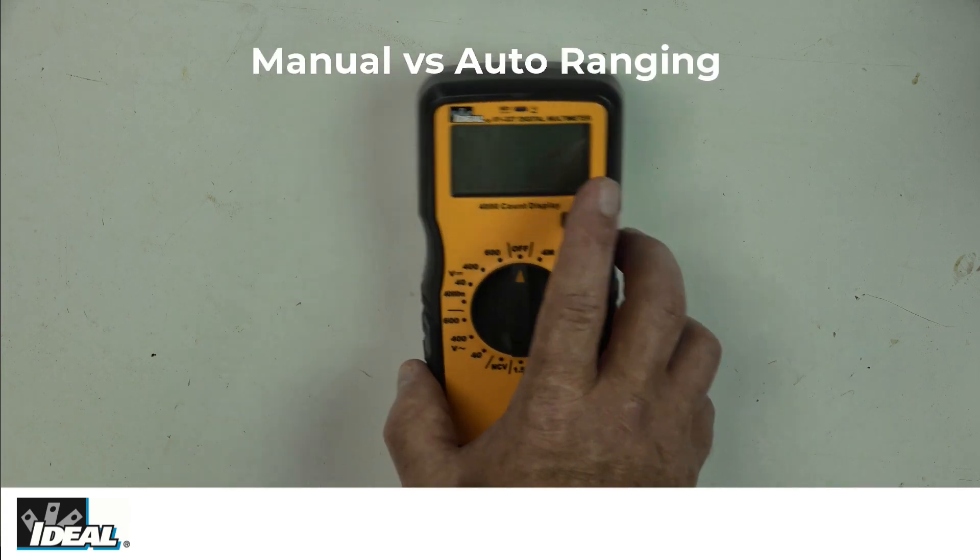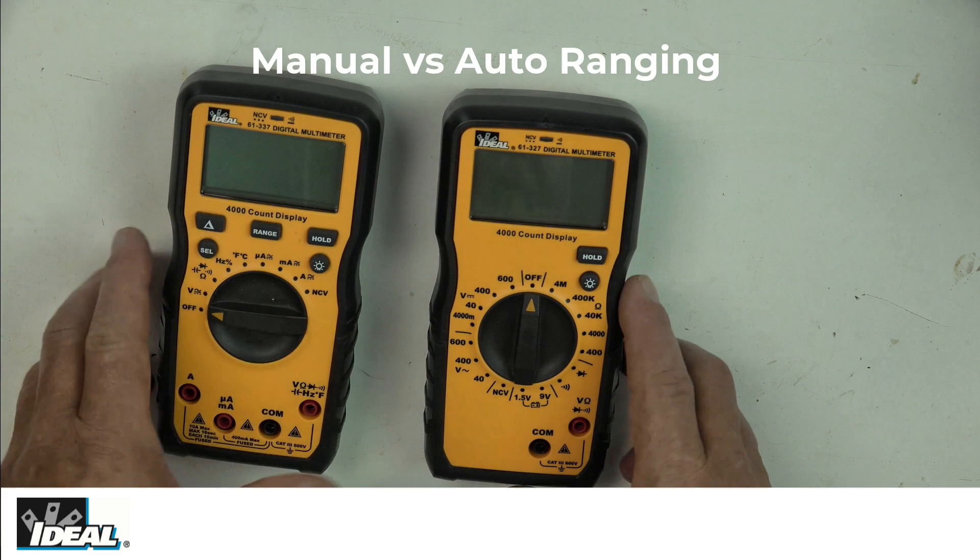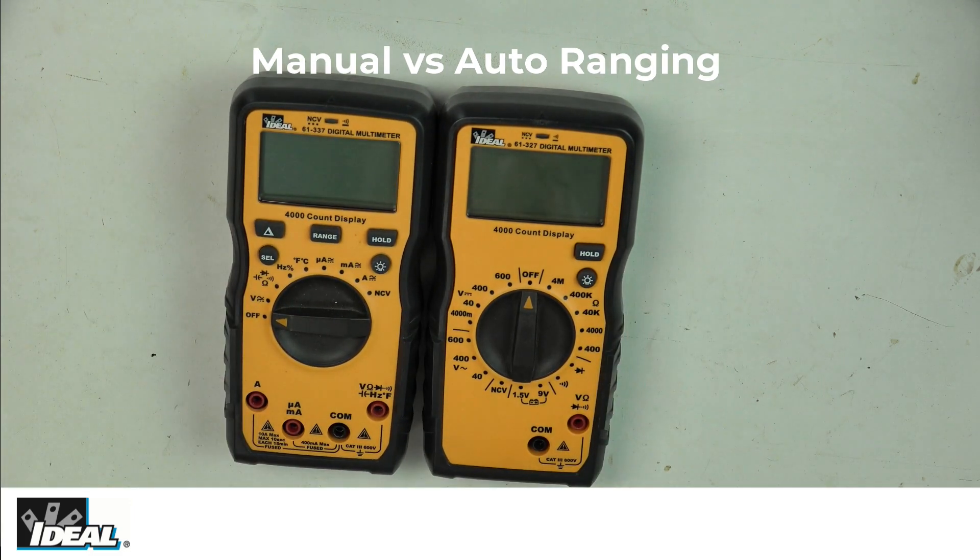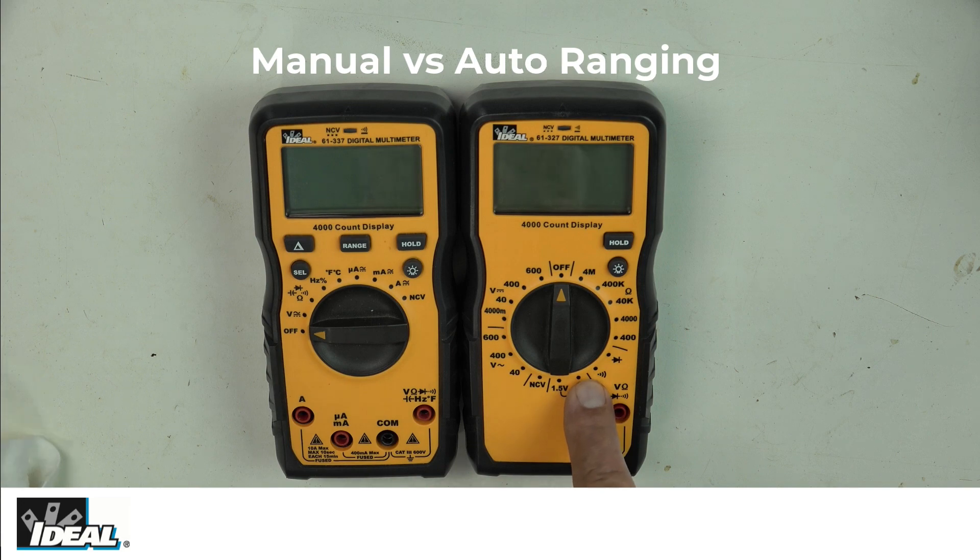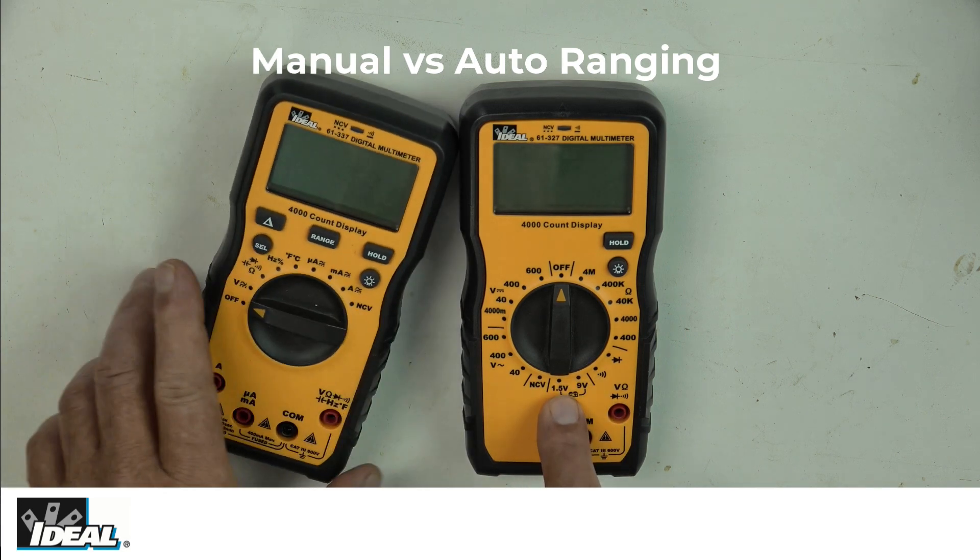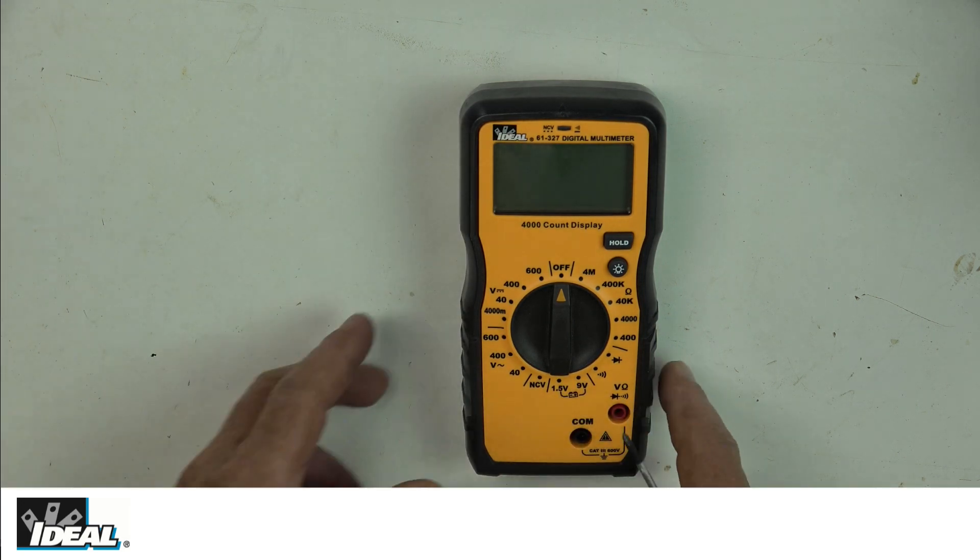I should point out that this is a manual ranging tester, so you have to know how to set the range. A step up would be an auto-ranging tester. On auto-ranging testers, there's only one setting for volts AC or DC, and they will automatically set the range to get a more accurate reading. There's nothing wrong with manual ranging testers - you just have to know how to set the range to get an accurate reading, which we'll show you.